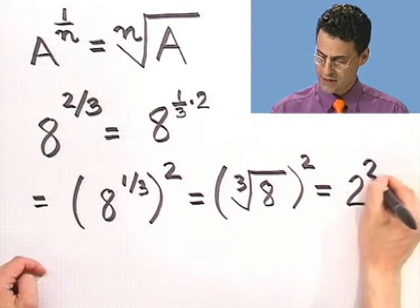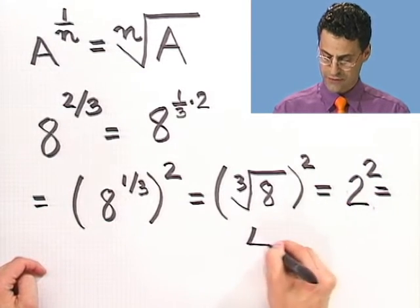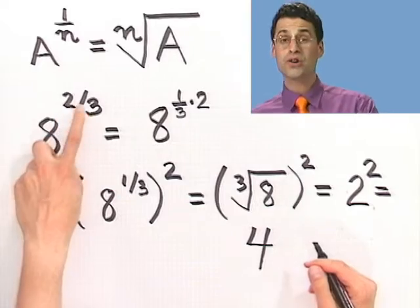And so I see this answer turns out to be 4. So 8 to the 2 thirds power turns out to be 4. Pretty cool. So these are how I deal with exponents when I see them. Let's try another one.